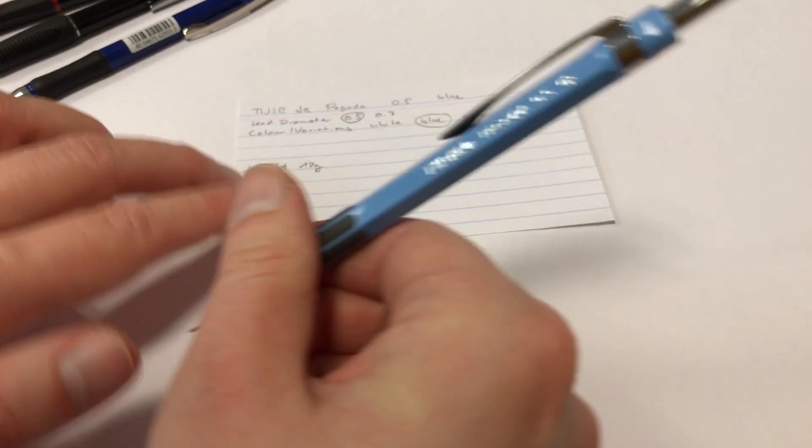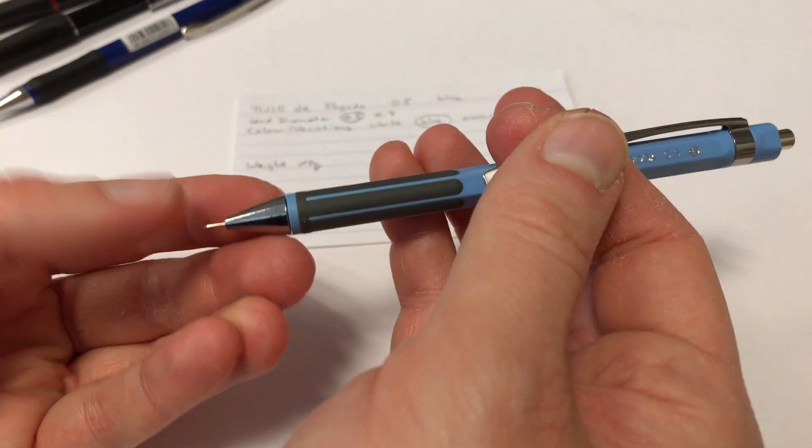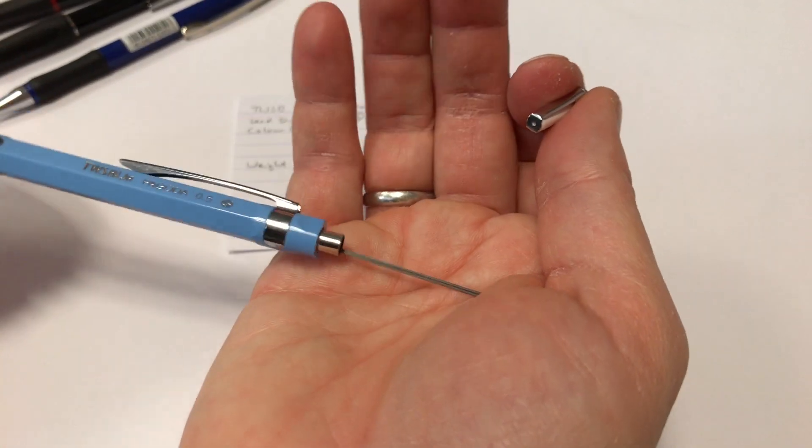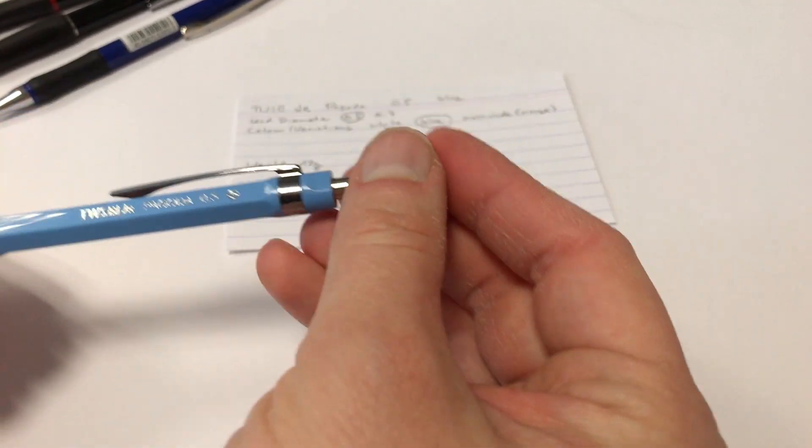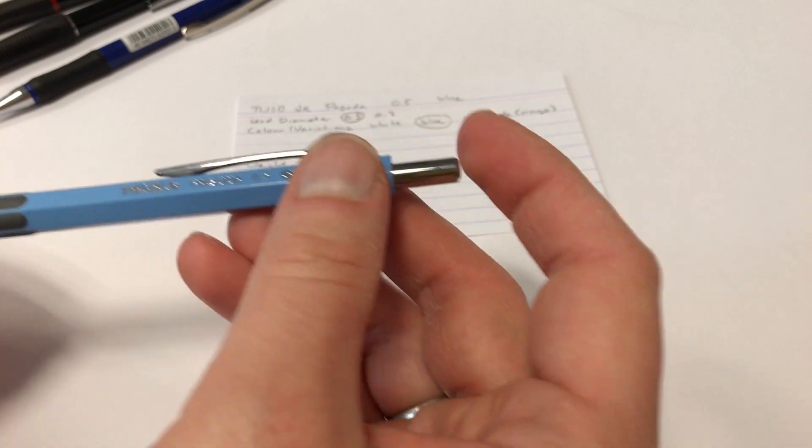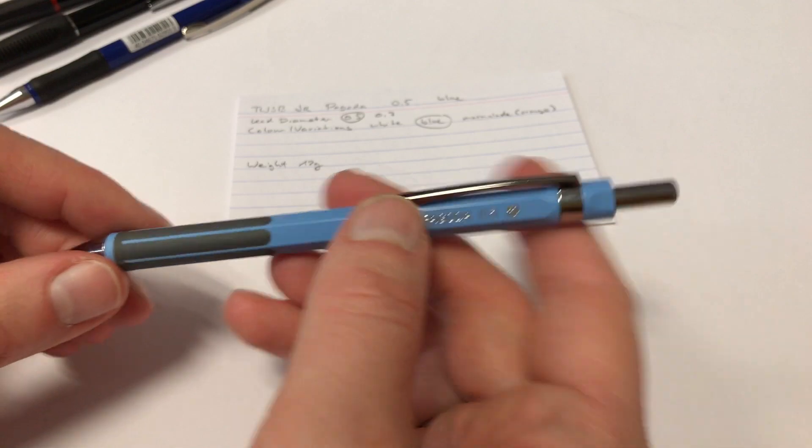Let's leave some space for diameter and so on. So weight is 12 grams, and that is with what you get, which is the pencil. There's one lead here and plus two. So the pencil, at least the one I got, came with three leads.